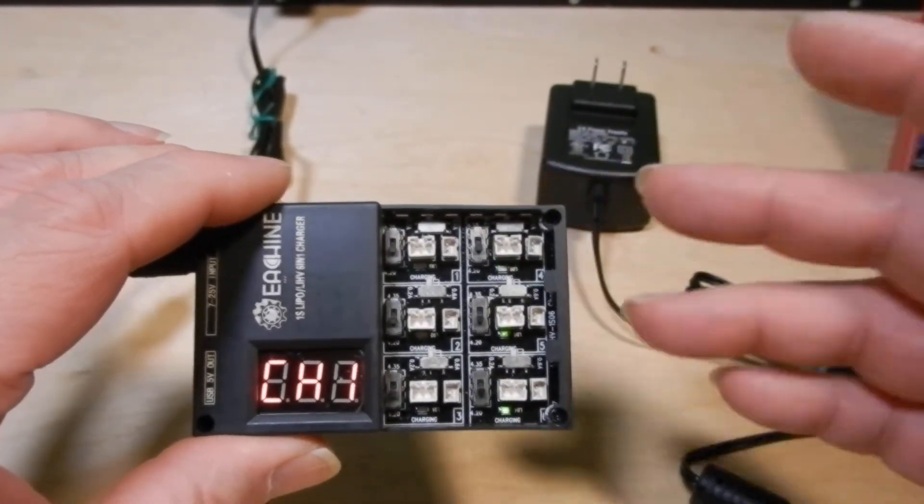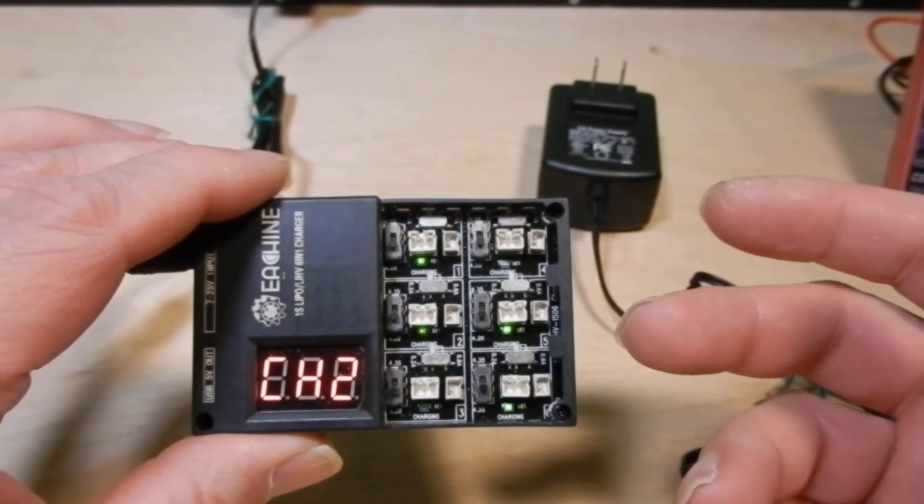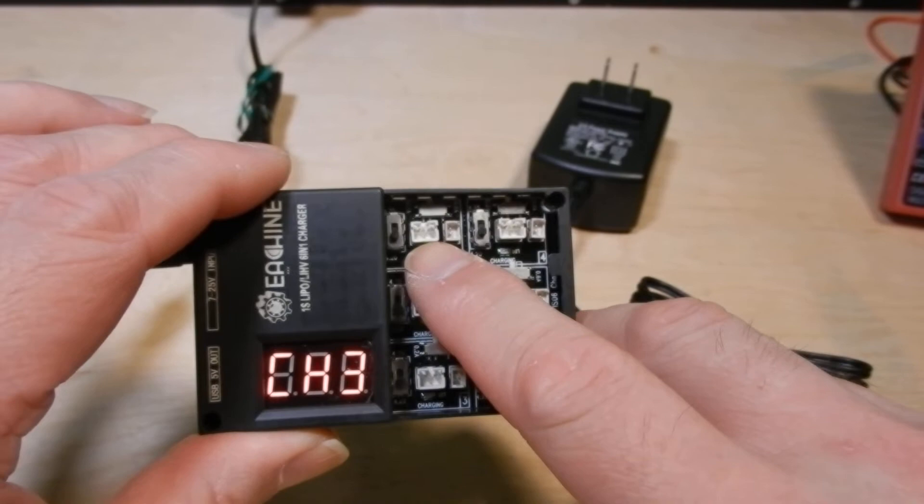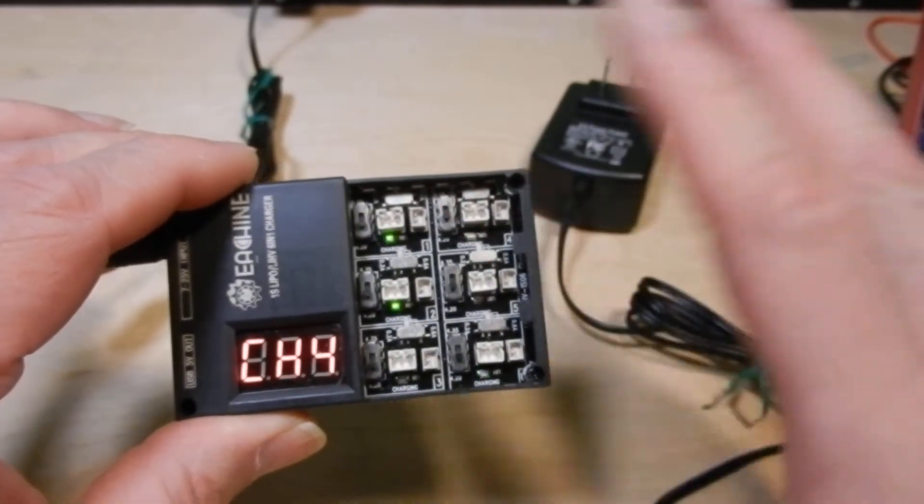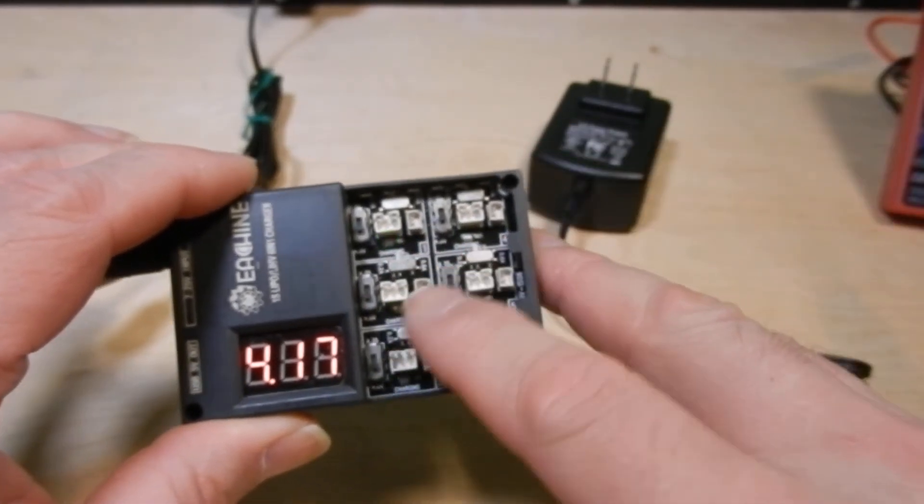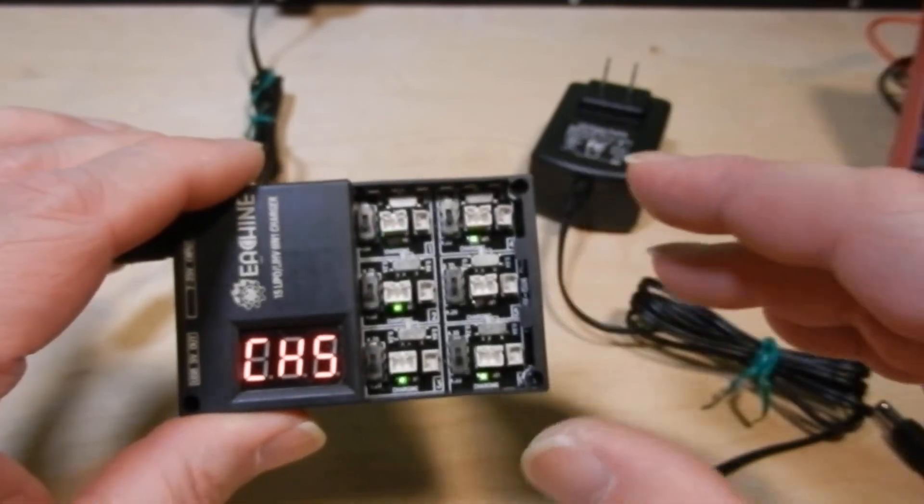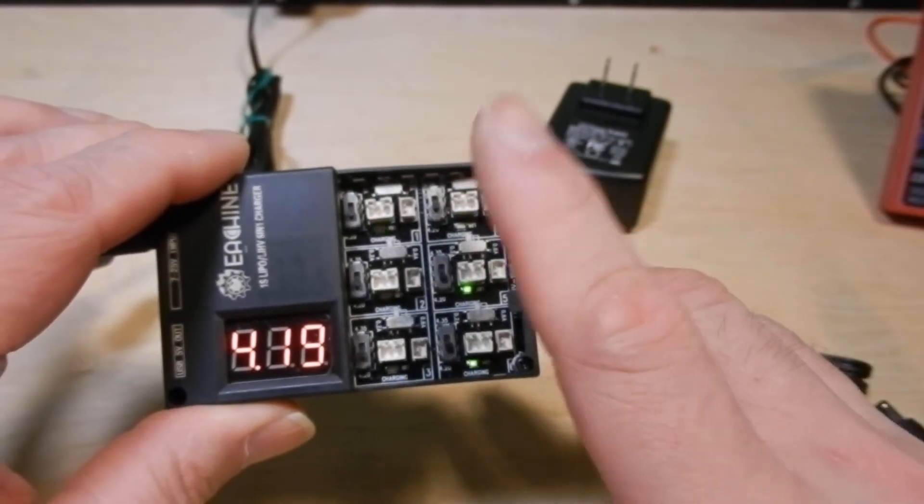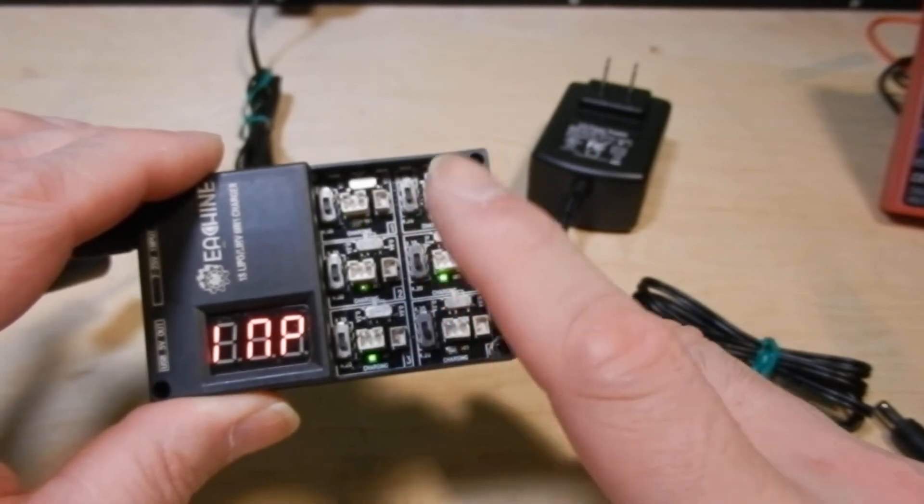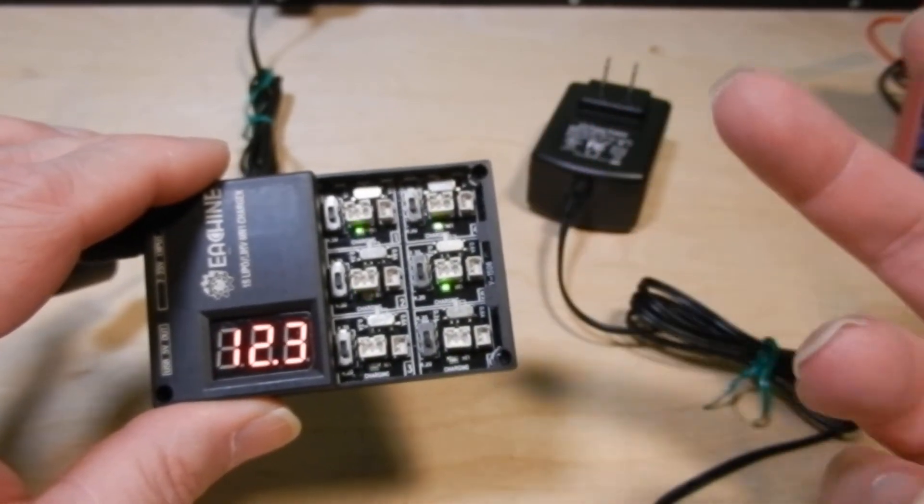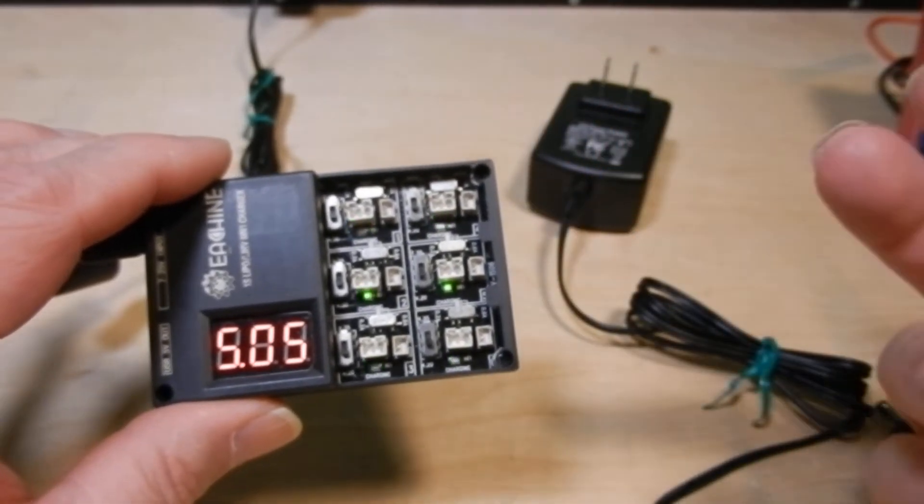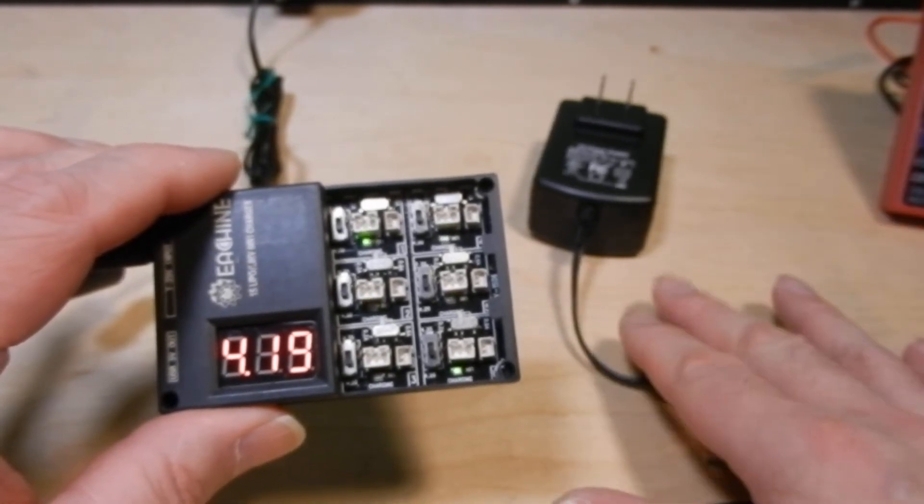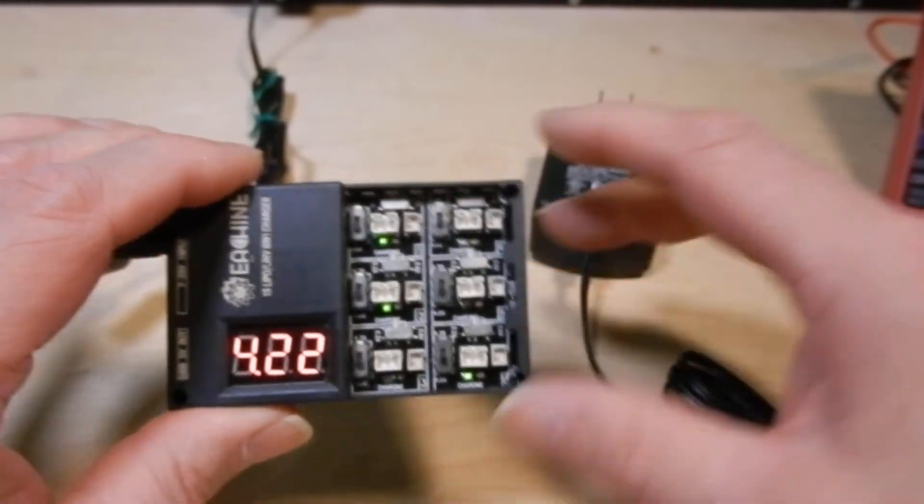But you wouldn't be able to do the 600 milliamp on a 2 amp power supply. You'd only be able to put two batteries in at 600 milliamp and be safe. You wouldn't be able to put any more in there at all. If you want to charge at 600 milliamp on all six, that's 3600 milliamps. So you would need a safety margin of 40 to 50%. I would recommend at least a 5 amp power supply, even maybe a 6 amp just to be on the safe side.